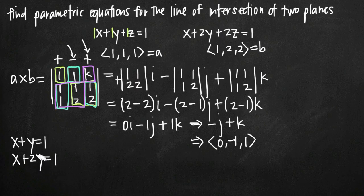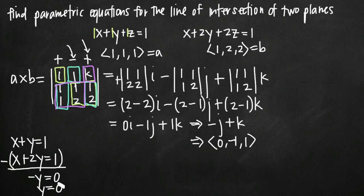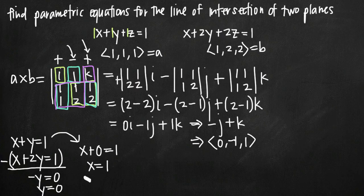Now we solve this system of simultaneous equations. Subtracting the second equation from the first eliminates x, leaving y minus 2y = 0, so negative y = 0, meaning y = 0. Since we set z = 0, and now y = 0, we plug y = 0 into the first equation: x plus 0 equals 1, so x equals 1. Our coordinate point on the line is (1, 0, 0).